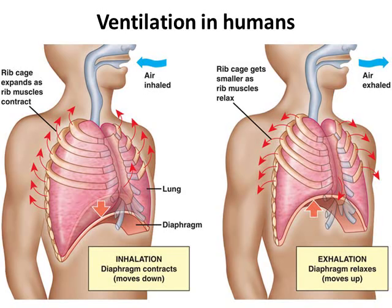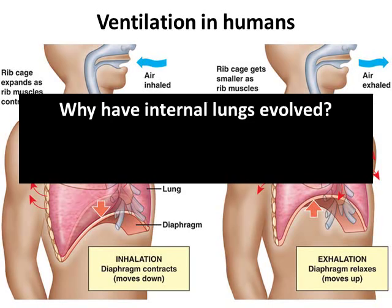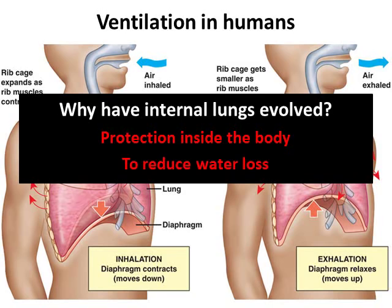Exhalation is basically inhalation in reverse. The intercostal muscles relax, the diaphragm also relaxes and becomes more dome-shaped, the volume in the thorax decreases, pressure increases, and air is squeezed out. We have internal lungs for two key reasons: to protect them by keeping them inside the body, and to reduce water loss — though you still lose a little water when breathing out, it would be far more if the lungs were on the outside.